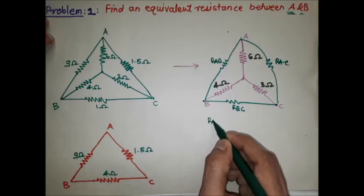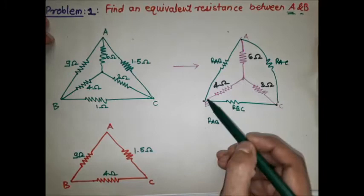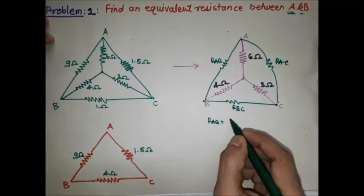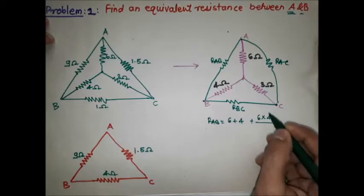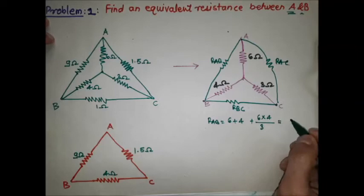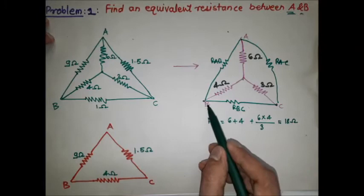To find RAB in the delta network: the two resistances connected to A and B in the star network are 6 ohm and 4 ohm. So RAB = 6 + 4 + (6 × 4) / 3, where 3 ohm is the opposite resistance, which gives RAB = 18 ohm.